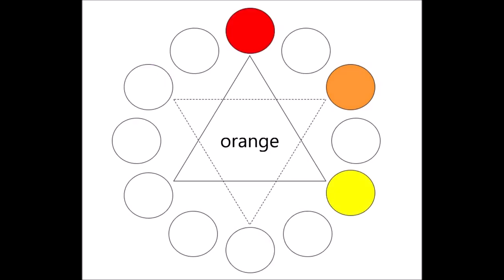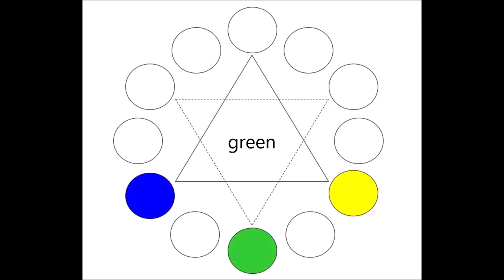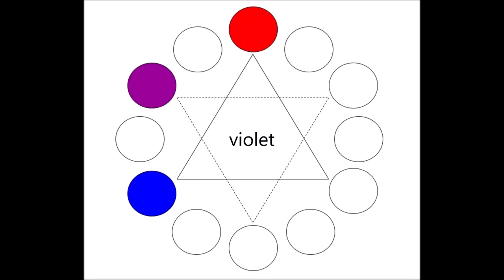When you mix red and yellow together, you create orange. When you mix yellow and blue together, you create green. And when you mix blue and red together, you create violet.